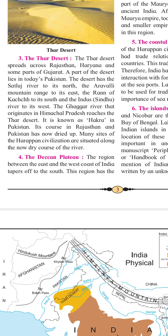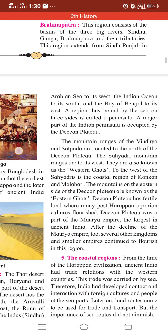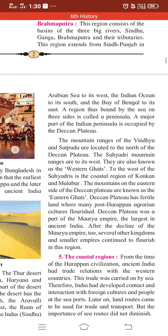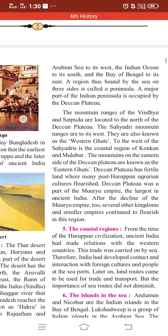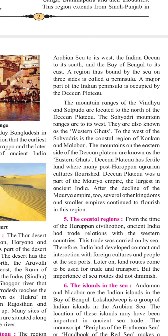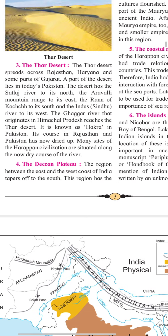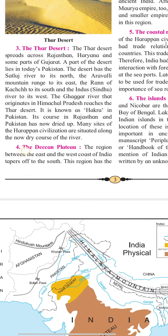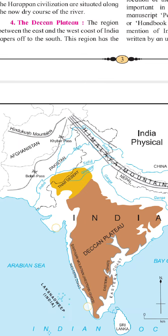The Deccan Plateau is the region between the east and western coasts of India. It tapers off to the south. This region has the Arabian Sea to its west, the Indian Ocean to its south, and the Bay of Bengal to its east. Being bound by the sea on three sides, this region is called a peninsula, and a major part of the Indian peninsula is occupied by the Deccan Plateau.